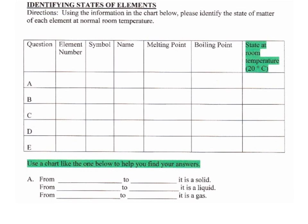What you're going to begin doing is actually identifying the states of different elements, and elements are pure substances. I'm going to model some different substances than the ones you will do for this activity in class. You will be given the element name, and you will have to identify the atomic number, its symbol, its melting point in degrees Celsius, and its boiling point in degrees Celsius. Room temperature in this case is 20 degrees Celsius, because scientists like to use Celsius, where America is kind of the oddball and we like to use Fahrenheit.